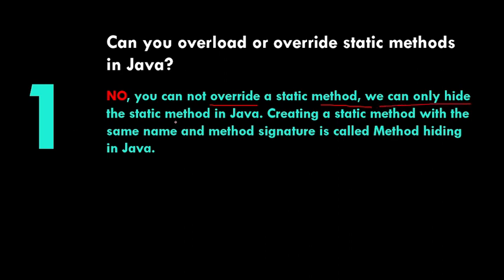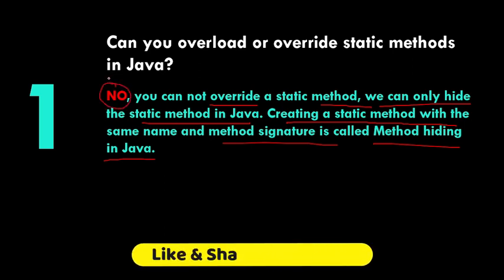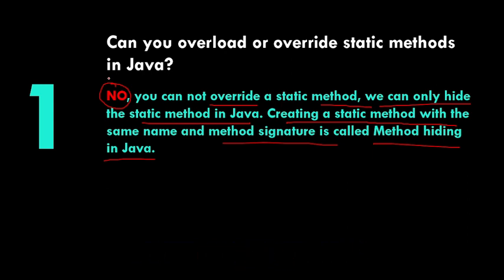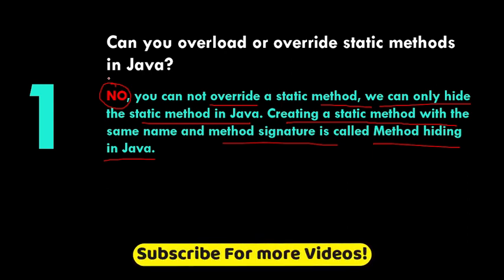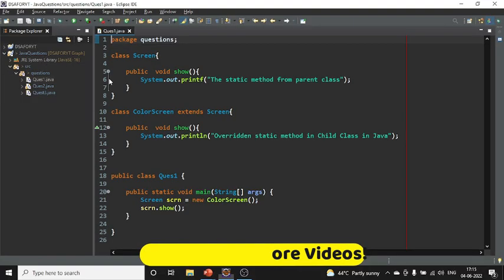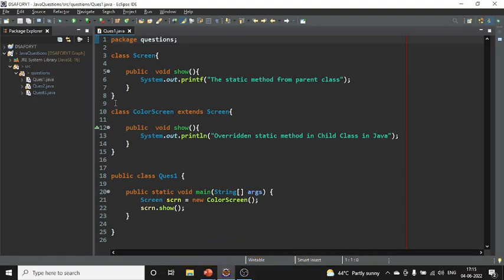You cannot override a static method in Java. We can only hide the static method by creating a static method with the same name and signature — this is called method hiding. It is not allowed because it is a feature of Java. Now let's jump into the code and see how this works.